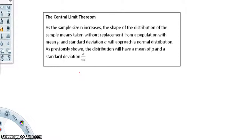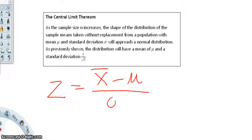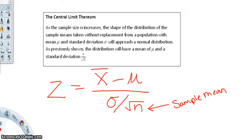The Central Limit Theorem can be used to answer questions about sample means in the same manner that the normal distribution answers questions about individual values. The only difference is that we need a new formula for z-values: z equals x-bar minus mu, divided by sigma divided by the square root of n. So that's our sample mean minus our population mean, divided by our population standard deviation divided by the square root of the number of samples, which is our sample standard deviation.